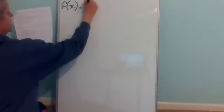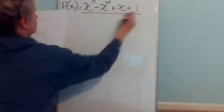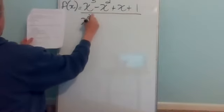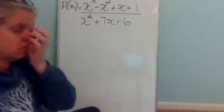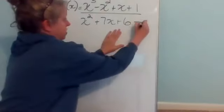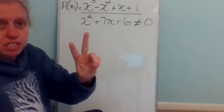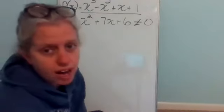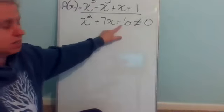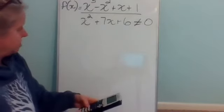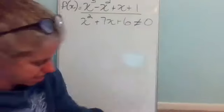Last one: F of X equals X cubed minus X squared over X squared plus seven X plus six. The denominator can't equal zero, and since it's X squared, I'm going to have two solutions. Use the quad program on your calculator. Type in A, B, and C, which will be one, seven, and six. So the numbers that X cannot be are negative six and negative one.